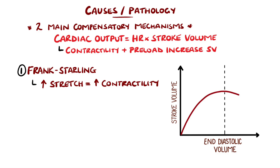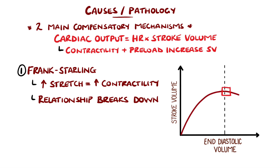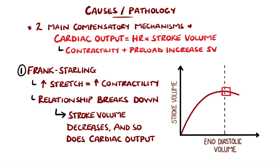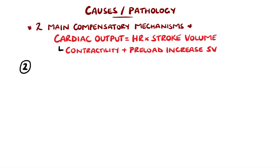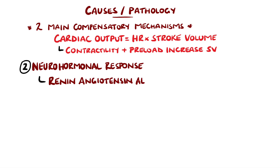Initially, as the end-diastolic volume increases, there is a matched increase in stroke volume that maintains the cardiac output. However, at a certain point, this relationship breaks down. So as the end-diastolic volume continues to increase, the stroke volume stops increasing and then begins to decrease. At this point, the compensation mechanism is failing and the cardiac output drops, resulting in heart failure.